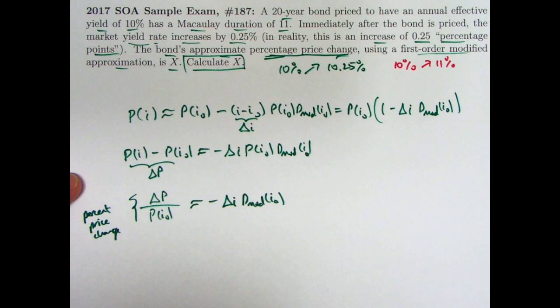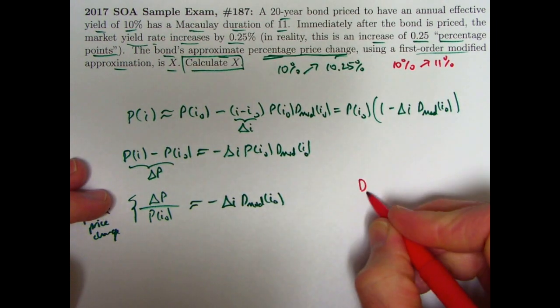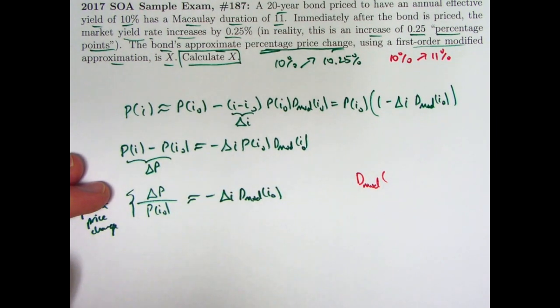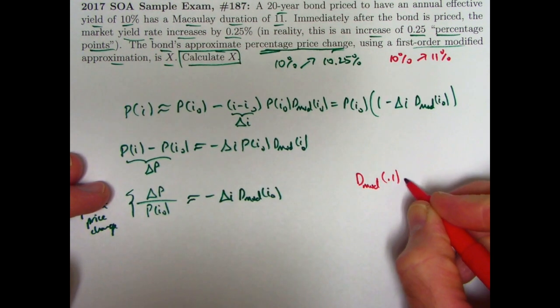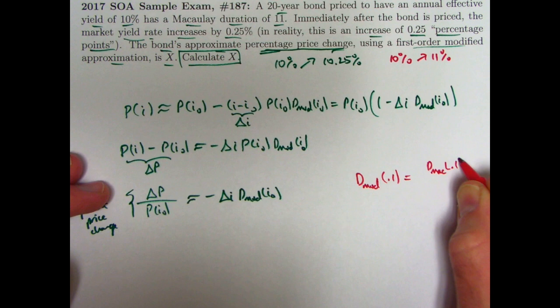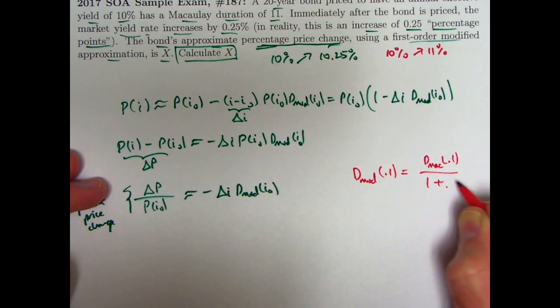Of course, I need to find the modified duration. I'm given the Macaulay duration. So we need to use the relationship between the modified duration and the Macaulay duration. Let's go ahead and plug in i₀ here, which is 0.1. The modified duration is the Macaulay duration, dMac of 0.1 in this case, divided by 1 plus i₀, which is 1 plus 0.1.